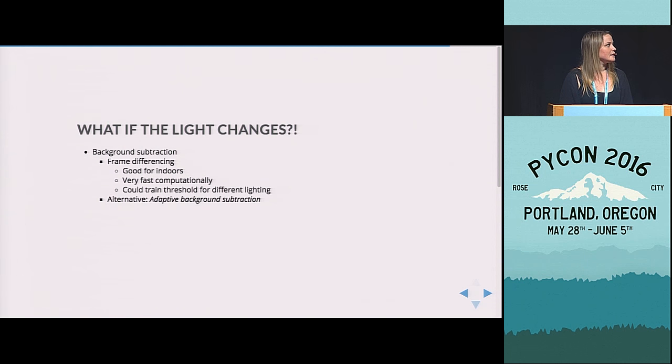So lastly, what if the light changes? So what I showed you as background subtraction was called frame differencing. And so it's good for indoors. It does adjust to the light as your average is changing over time. But you may get a wider or smaller range of differences and intensities of those pixels. And so that threshold that we cut off the difference at may change if the lighting changes. And so you could train a different threshold for maybe by time or brightness or intensity. You could have different modes for different brightnesses or intensities. But there's also other options for background subtraction that are more adaptive.